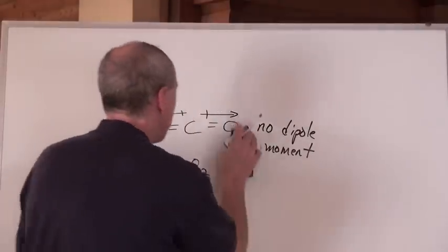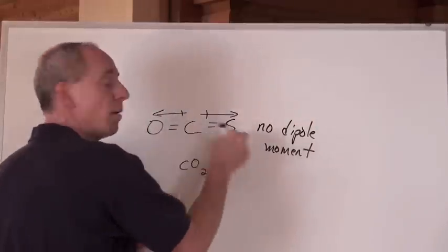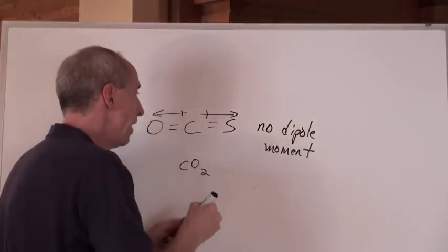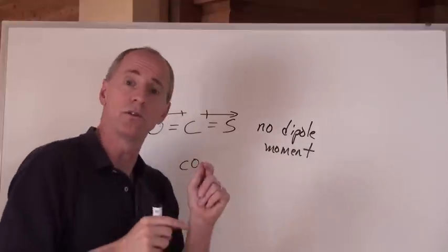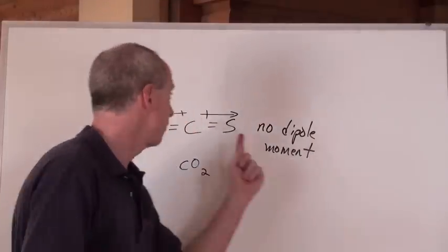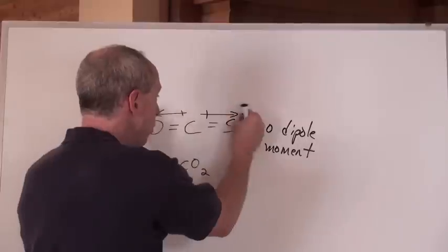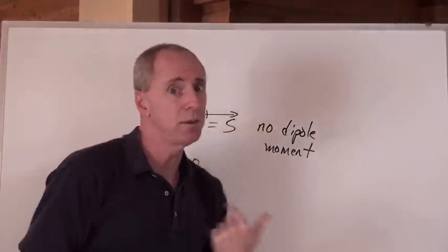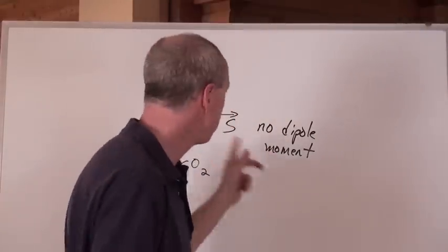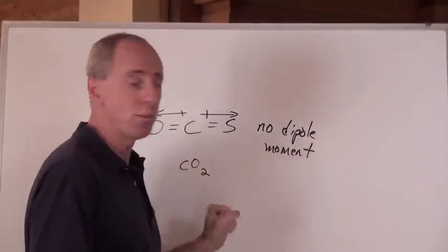By the way, if you put a sulfur there instead, the pulls would not be equal. One side would have a larger pull than the other, and so even though those arrows look like they cancel, if they're different elements with different electronegativities, the pulls are going to be different — and that's going to be a polar molecule. Not too polar, but polar enough. So that would have a dipole moment.